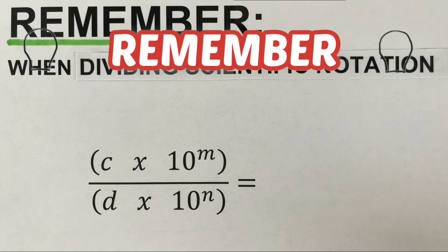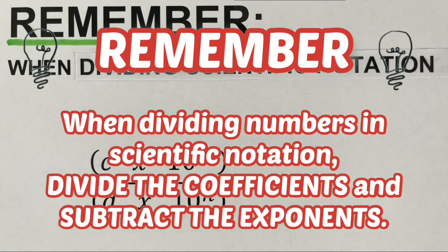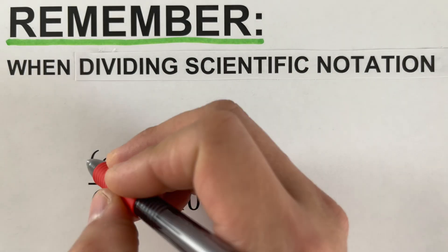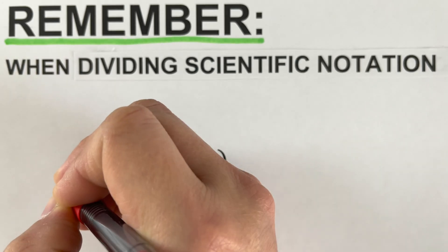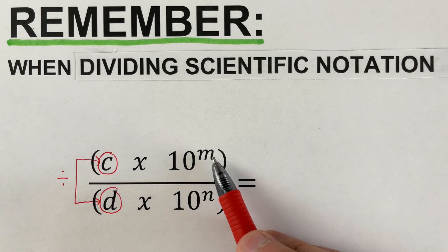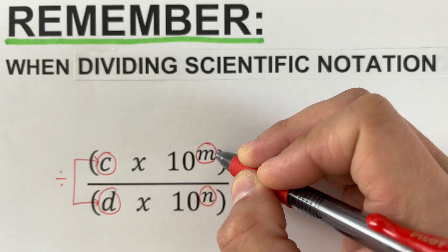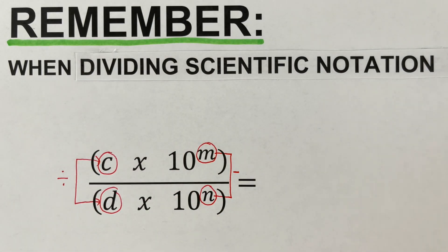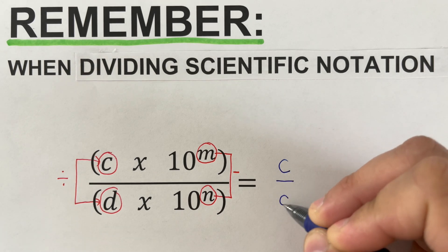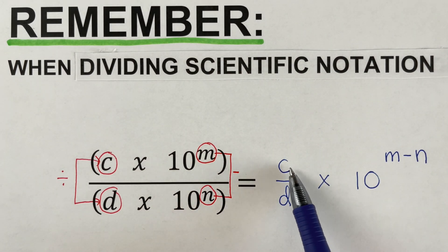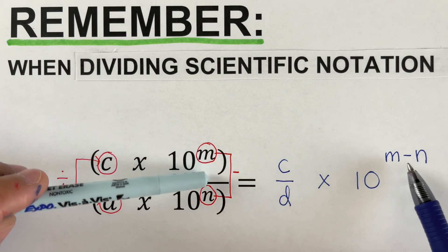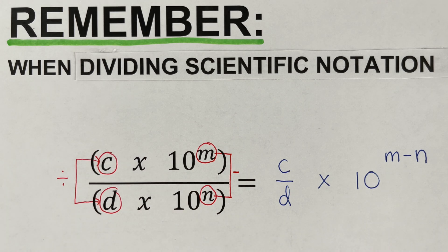The basic rule in dividing numbers in scientific notation is that we divide the coefficients and subtract the exponents. In this general scientific notation, c and d shall be divided together, and exponents m and n shall be subtracted together. So we can write the quotient as c over d times 10 to the power m minus n. Again, we divided the coefficients and subtracted their exponents — this is the general rule.